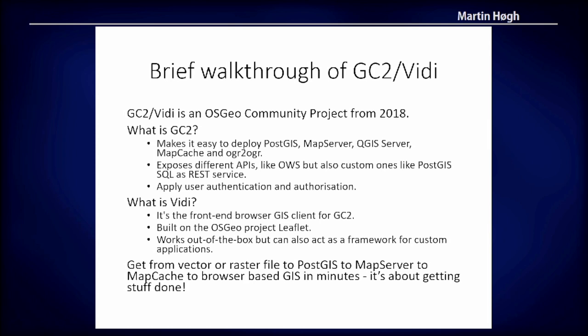Out of the box, GC2 exposes all layers in the PostGIS database as services like Web Map Service, Web Feature Service, Web Map Tile Service, Vector Tiles, and more. This means you can get a shapefile from your PC into a PostGIS database, visualized by MapServer or QGIS Server and tiled by MapCache in a couple of minutes. It's all about getting things done. Some users, like municipalities, are handling hundreds — maybe thousands — of database tables and views, so publishing a map mustn't take too long.